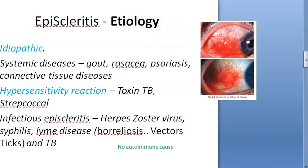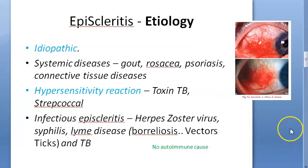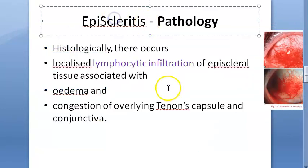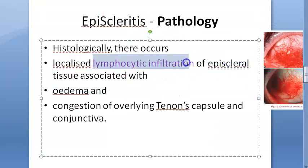The causes of episcleritis are: idiopathic, hypersensitivity, and other systemic diseases like gout. Pathologically, there will be lymphocytic infiltration of the episcleral tissue and edema, with congestion of the conjunctiva and tenon's capsule.